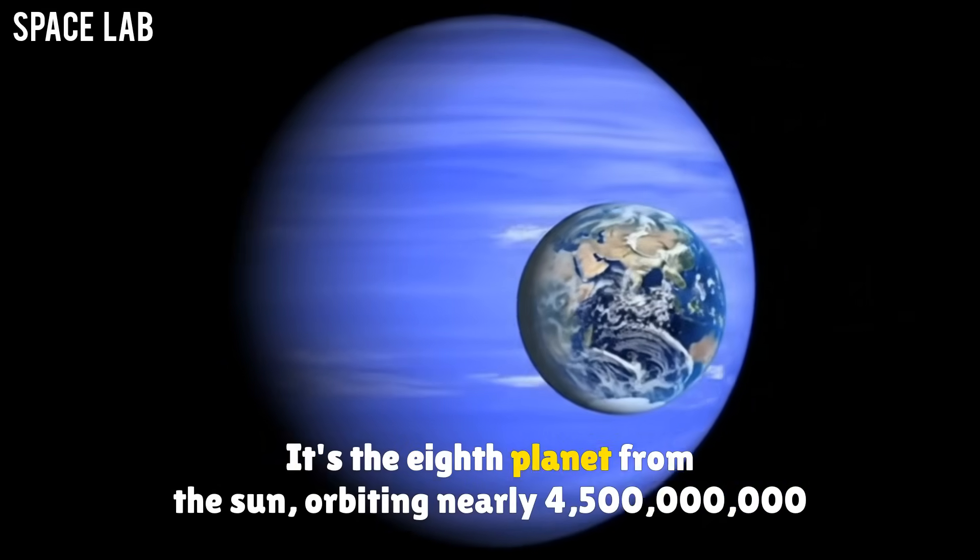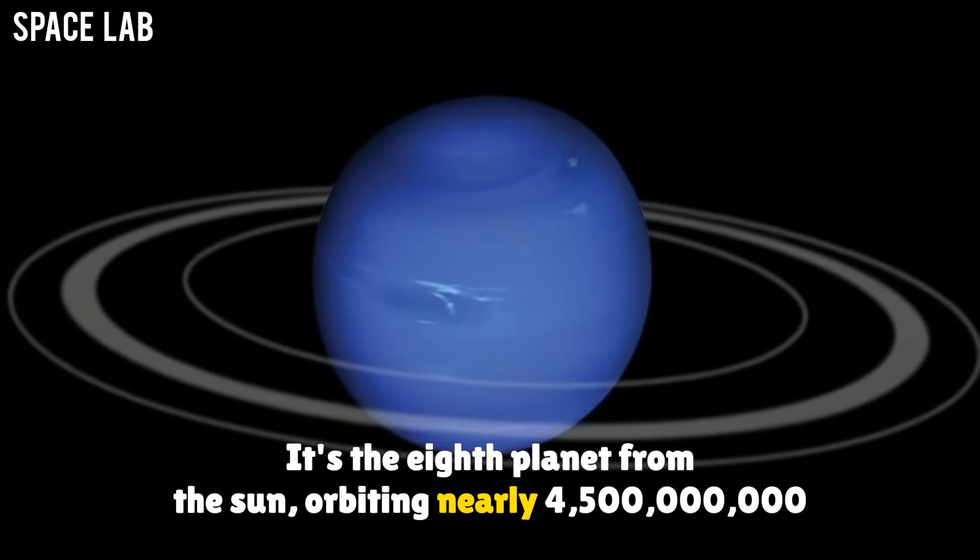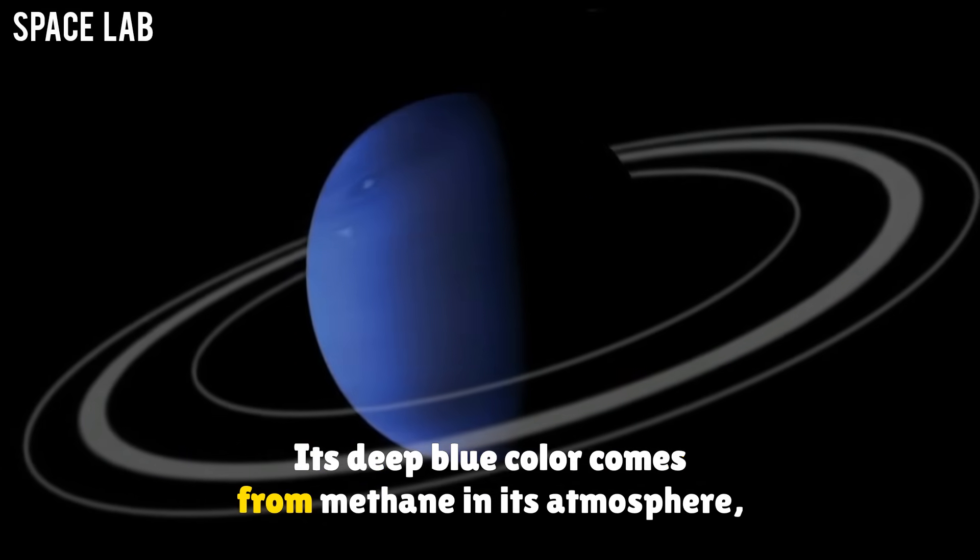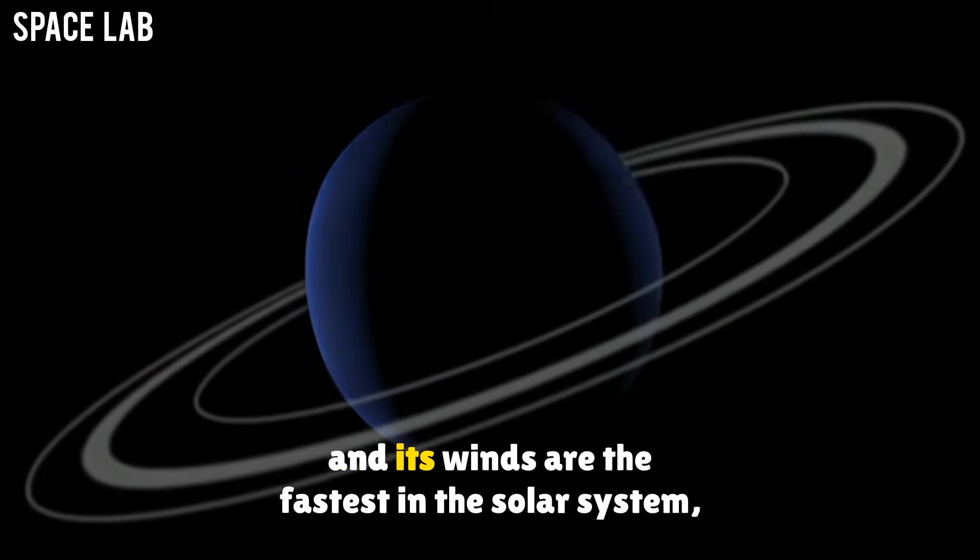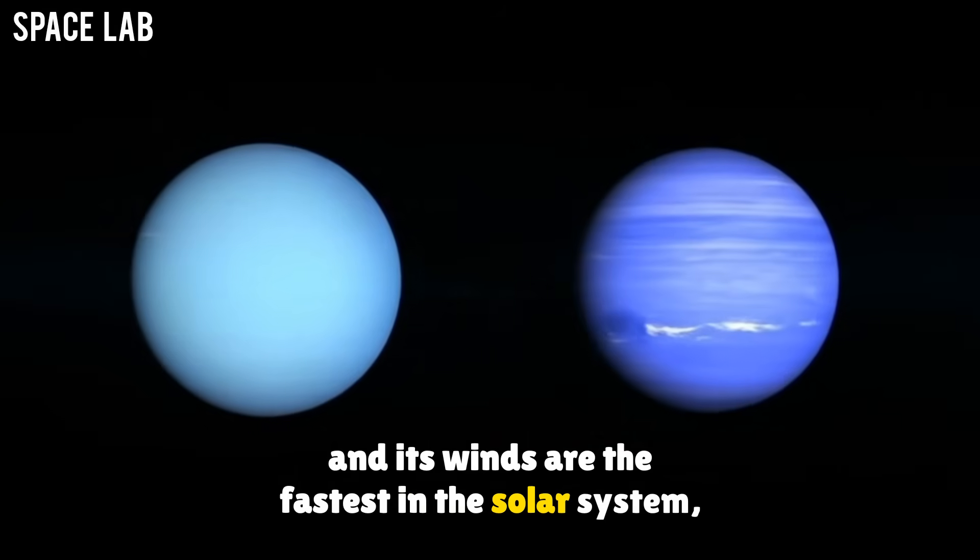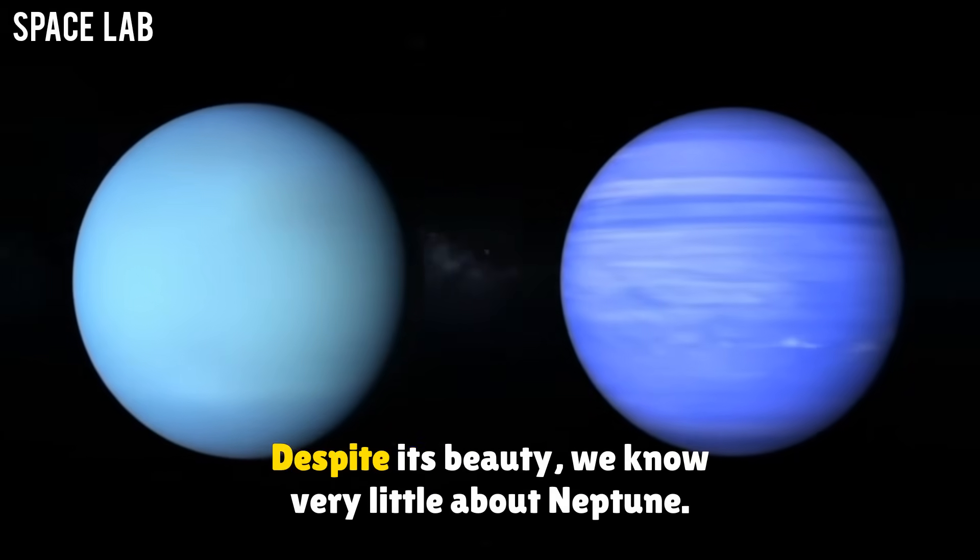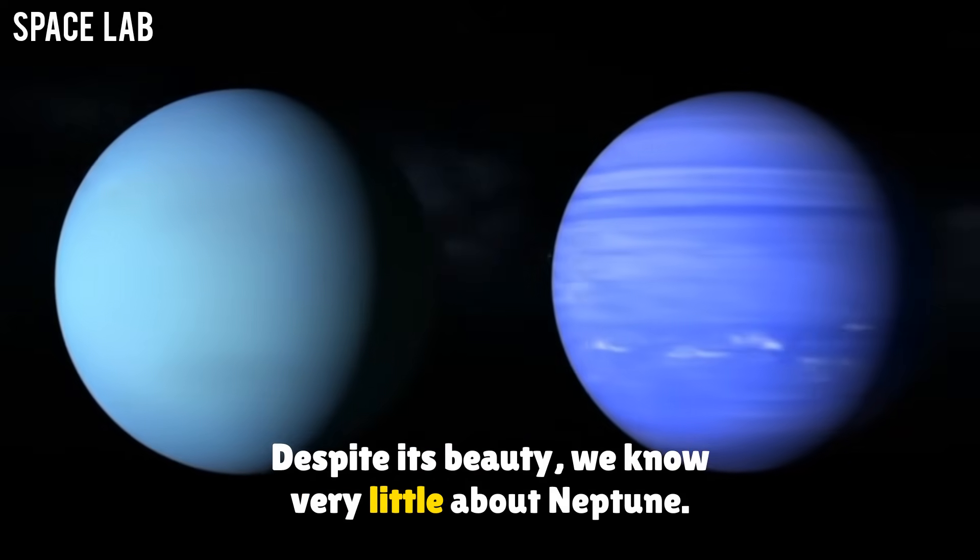It's the eighth planet from the Sun, orbiting nearly 4.5 billion kilometers away. Its deep blue color comes from methane in its atmosphere, and its winds are the fastest in the solar system, some racing at over 1,200 miles per hour. Despite its beauty, we know very little about Neptune.